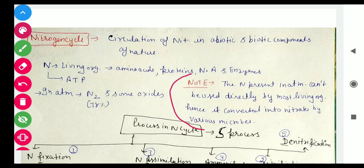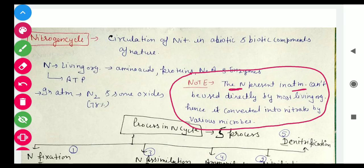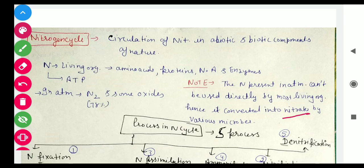An important point: nitrogen is present in the atmosphere at 78%. However, it cannot be used directly by most living organisms. First, it must be converted into nitrates, with the help of various microbes. So remember: atmospheric nitrogen is not directly used — it is first converted into nitrates through the help of different microbes.